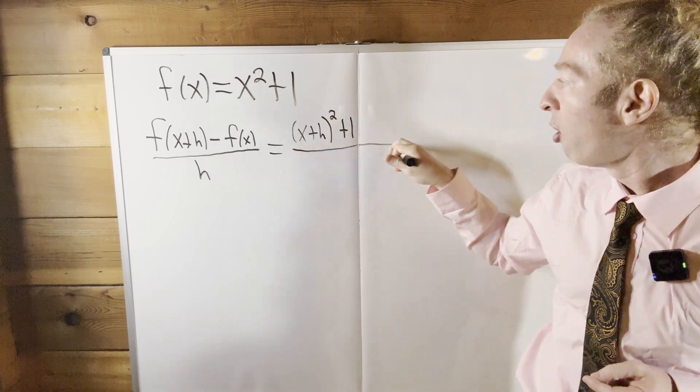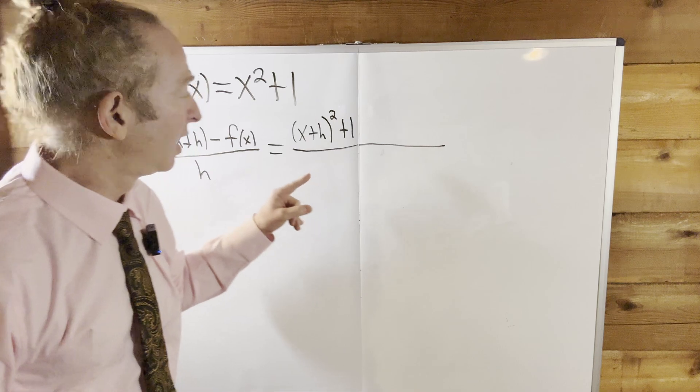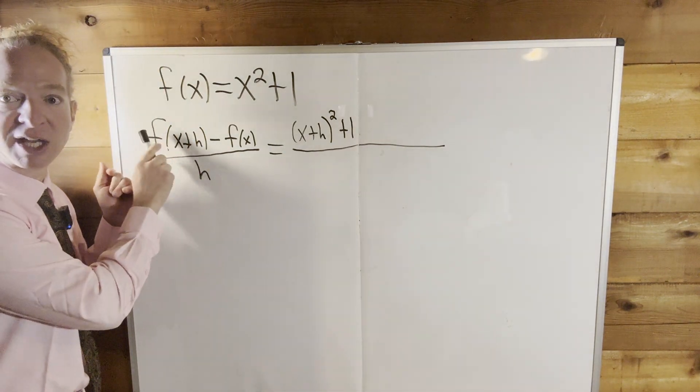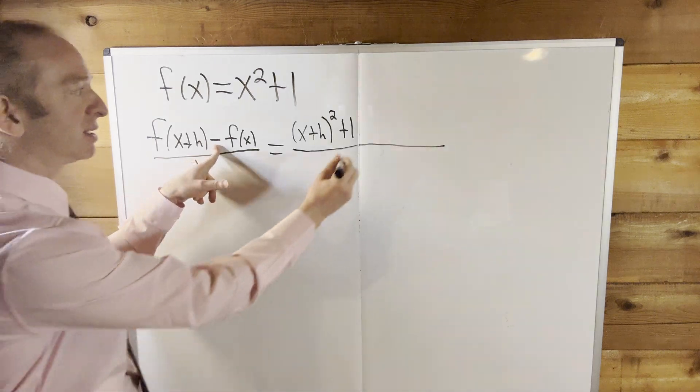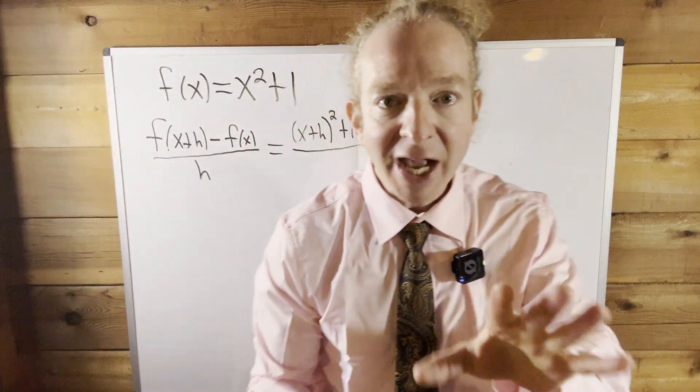So so far, the only thing I've written on the board, okay, is f(x+h). That's the only thing that has been written on the board. And then minus, we have the minus sign. Okay, and then x squared plus one.